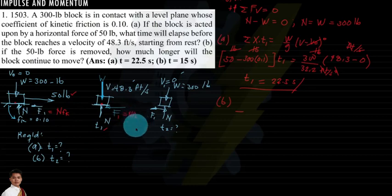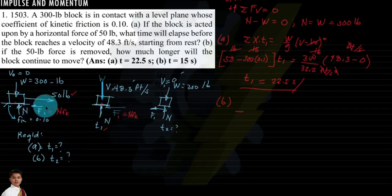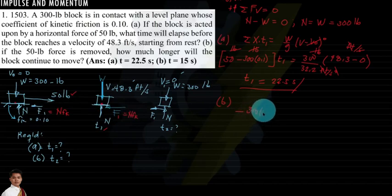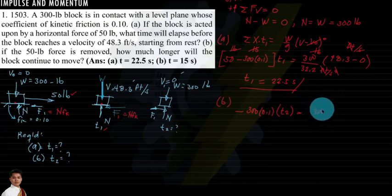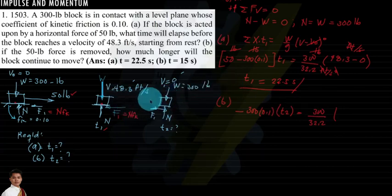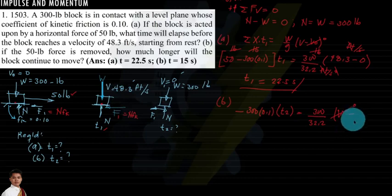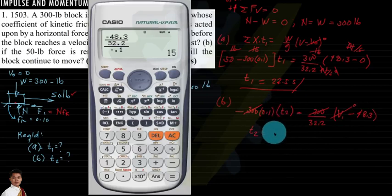Applying the impulse-momentum equation: minus (N times f-sub-k) times t2 equals (W/g) times (v-final minus v-initial). Here the final velocity is 0 and the initial velocity is 48.3 ft/s. Substituting: minus (300 times 0.1) times t2 equals (300/32.2) times (0 minus 48.3). The 300s cancel, giving t2 equals 15 seconds.